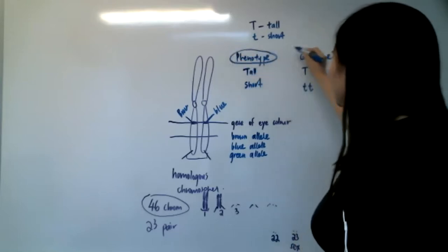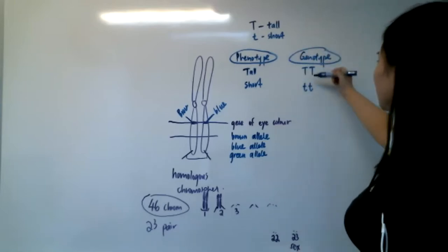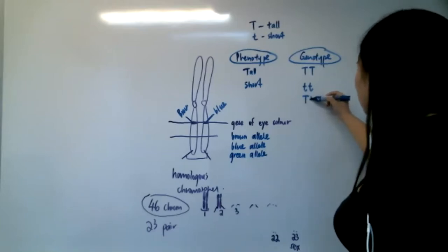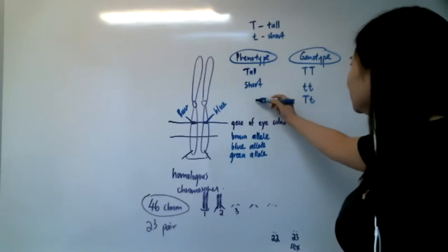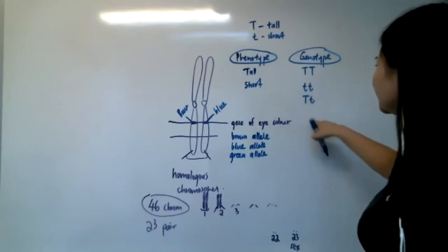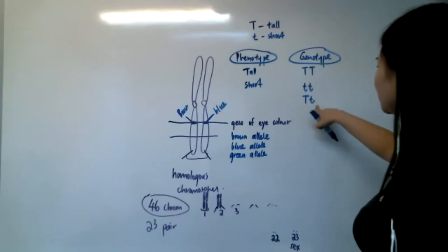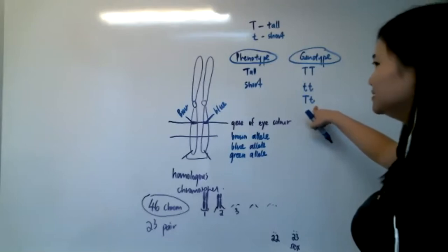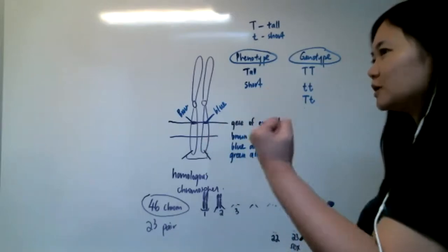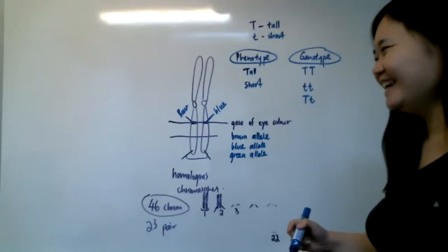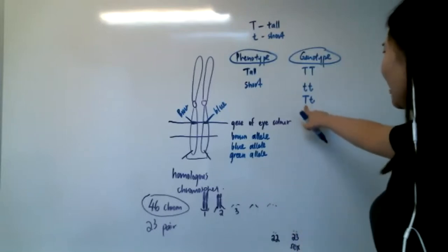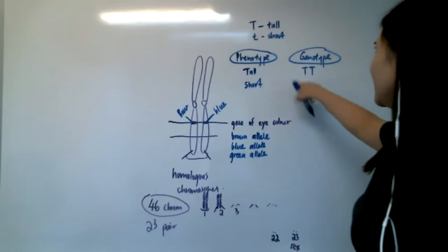Now you're able to identify what is phenotype and what is genotype. One more example: if your dad gives you capital T and your mom gives you a small t, what is your observable trait? Capital T is completely dominant over the small t. Do you know what is dominant? The dominant partner, the one that holds the power. So this capital T is dominant over the small t. So only capital T will express. So you end up with tall.